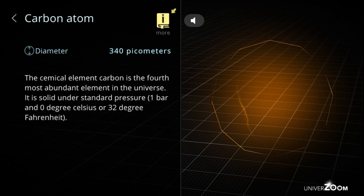Carbon atom diameter: 340 picometers. The chemical element carbon is the fourth most abundant element in the universe. It is solid under standard pressure of one bar and zero degrees Celsius or 32 degrees Fahrenheit.